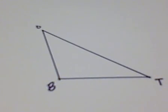In this video, I will be constructing the circumcenter of triangle OBT. The circumcenter is the intersection of the three perpendicular bisectors of a triangle.